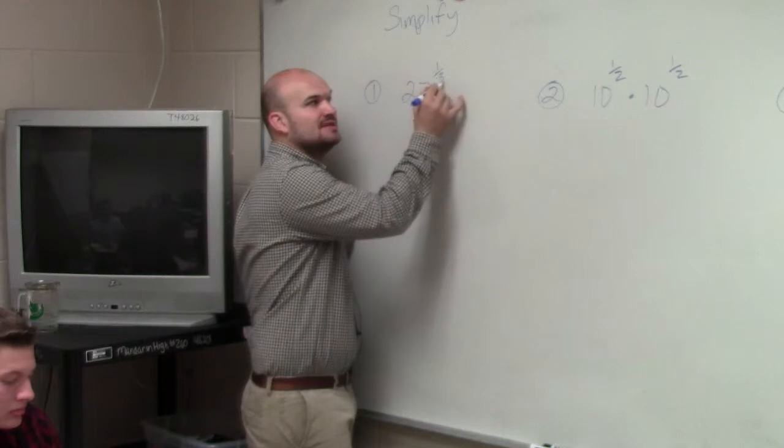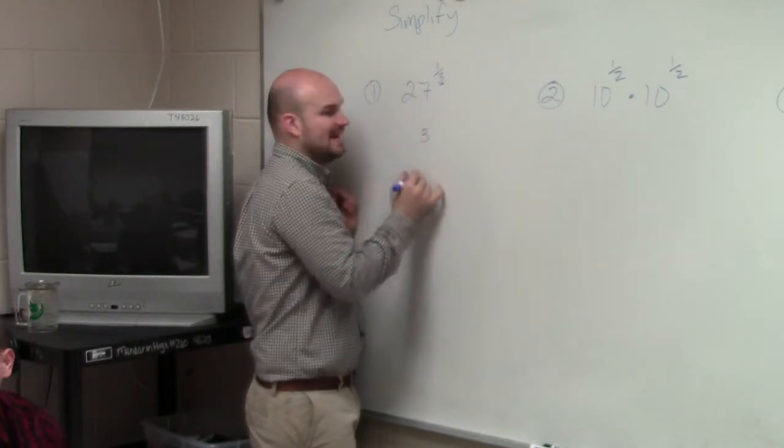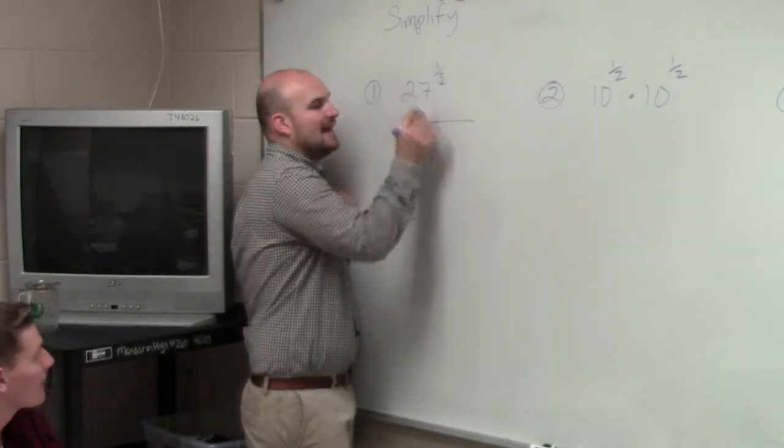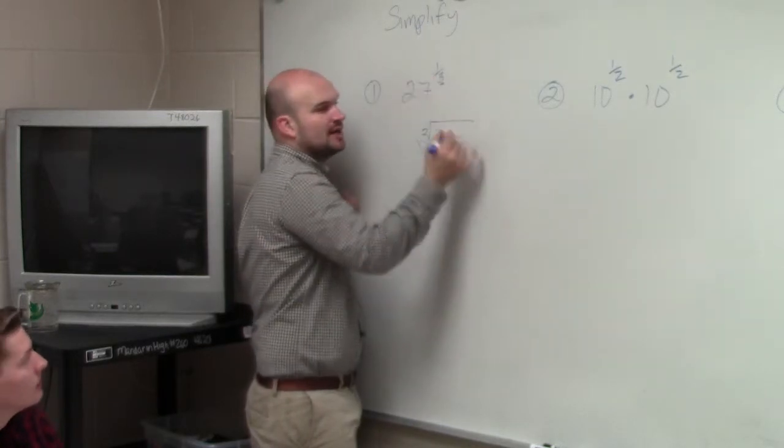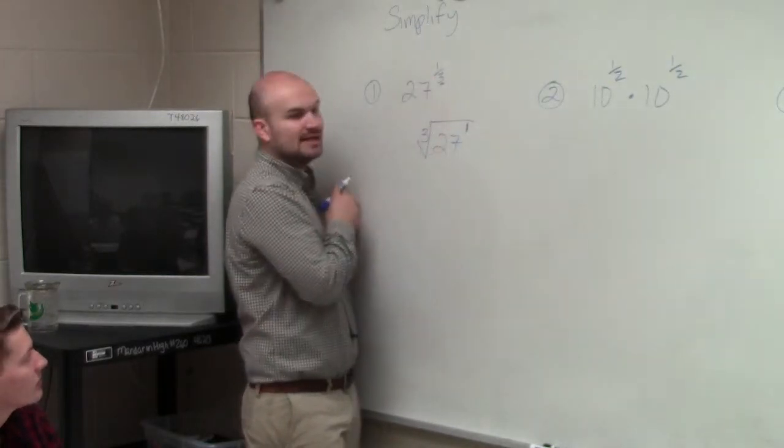So just like we talked about, the denominator becomes our index of our root. And 27 is going to become our radicand. And then our numerator is our radicand to that power.